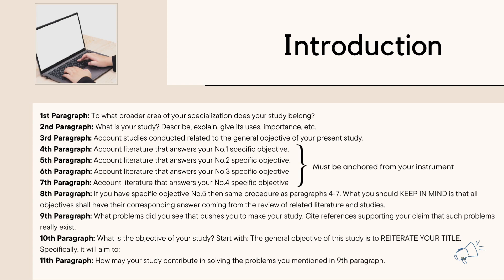For the third paragraph, you account for studies conducted related to the general objective of your present study. For the fourth paragraph, you account for literature that answers your number one specific objective.